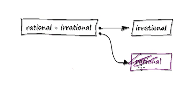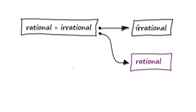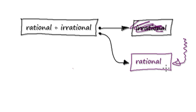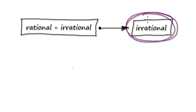If k is not a rational number, then k has no choice but to be an irrational number. If k is not an irrational number, then k has no choice but to be a rational number. So the idea behind proof by contradiction is that you create the opposite scenario.